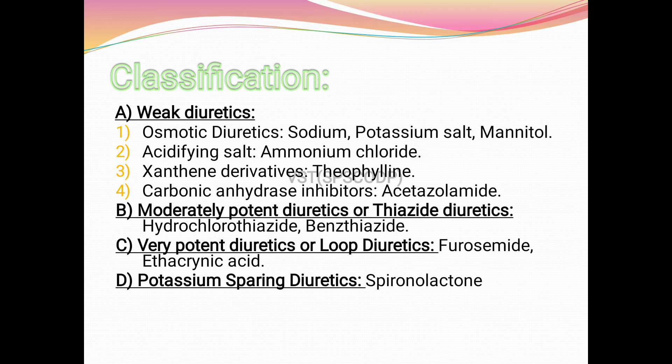Osmotic diuretics include salts such as sodium, potassium, and mannitol. Acidifying salts include ammonium chloride. Xanthine derivatives include theophylline. Carbonic anhydrase inhibitors — carbonic anhydrase enzyme inhibitor drugs — for example, acetazolamide.